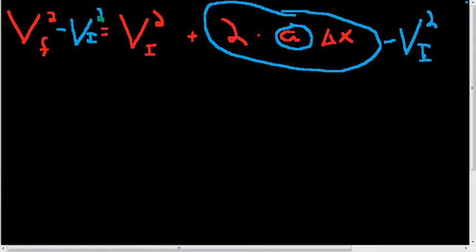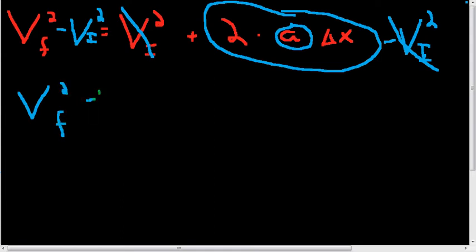Vi squared. As you can see on the right side, we have vi squared minus vi squared. These cancel out and go to zero. What we're left with is vf squared minus vi squared equals everything that's left in this bubble: 2 times a times delta x.